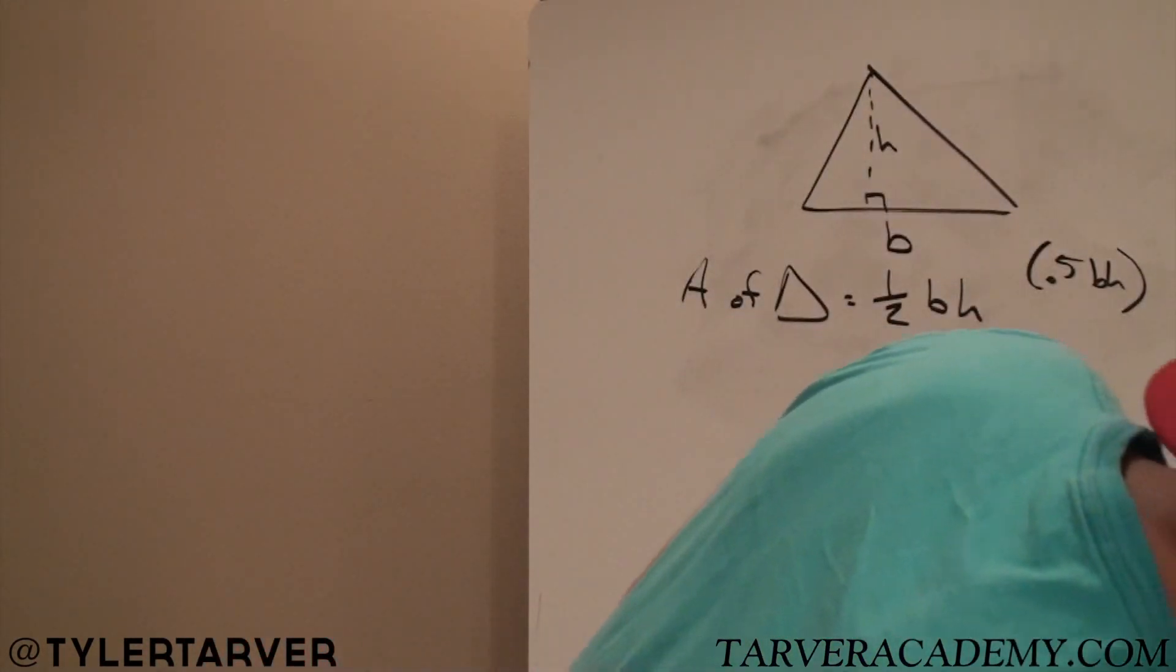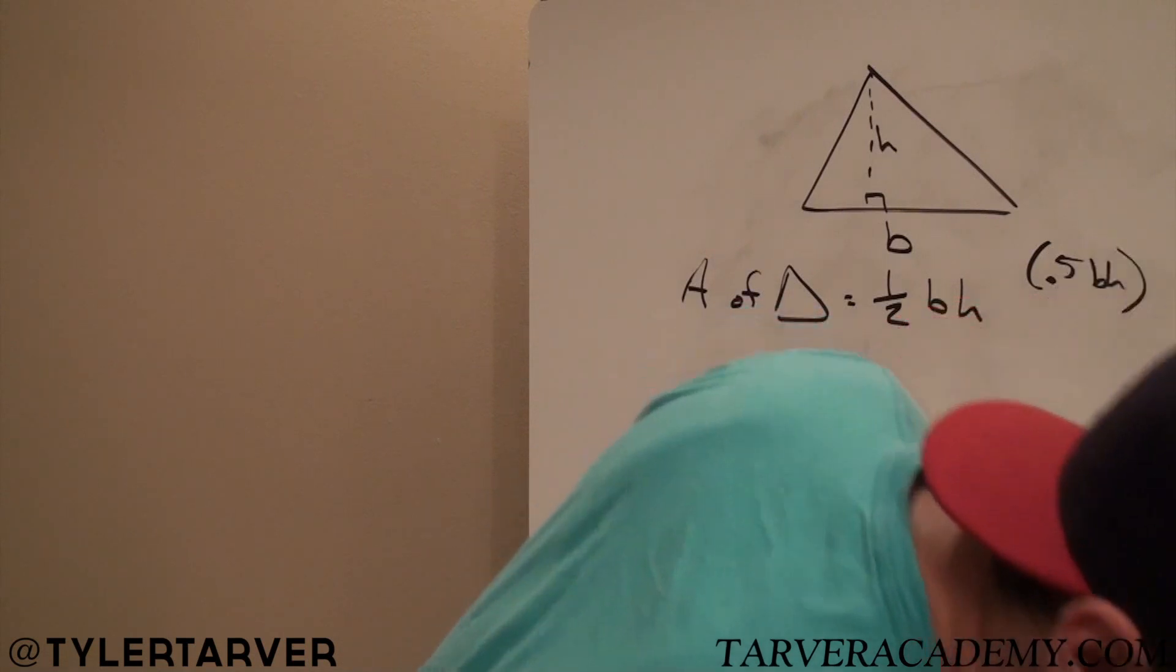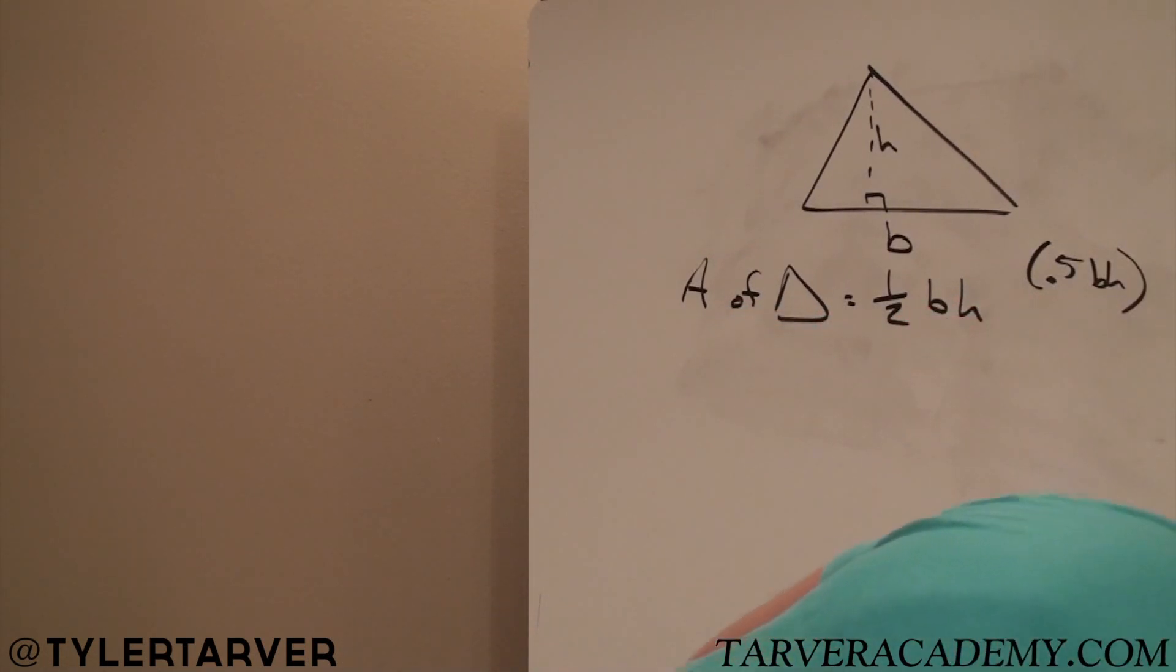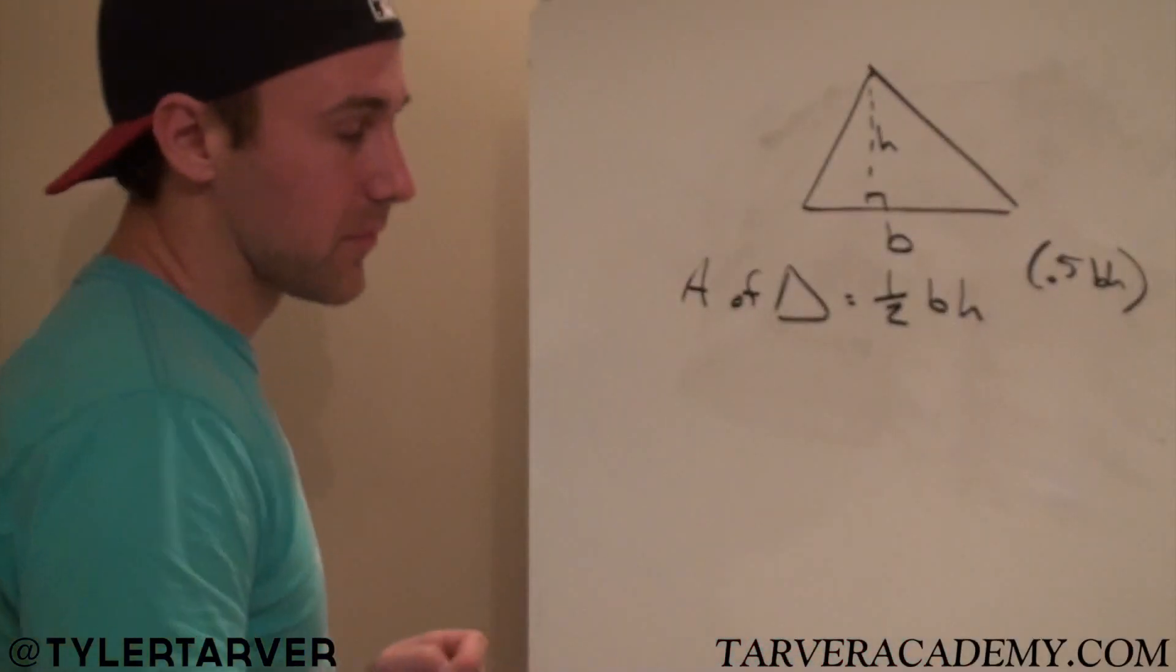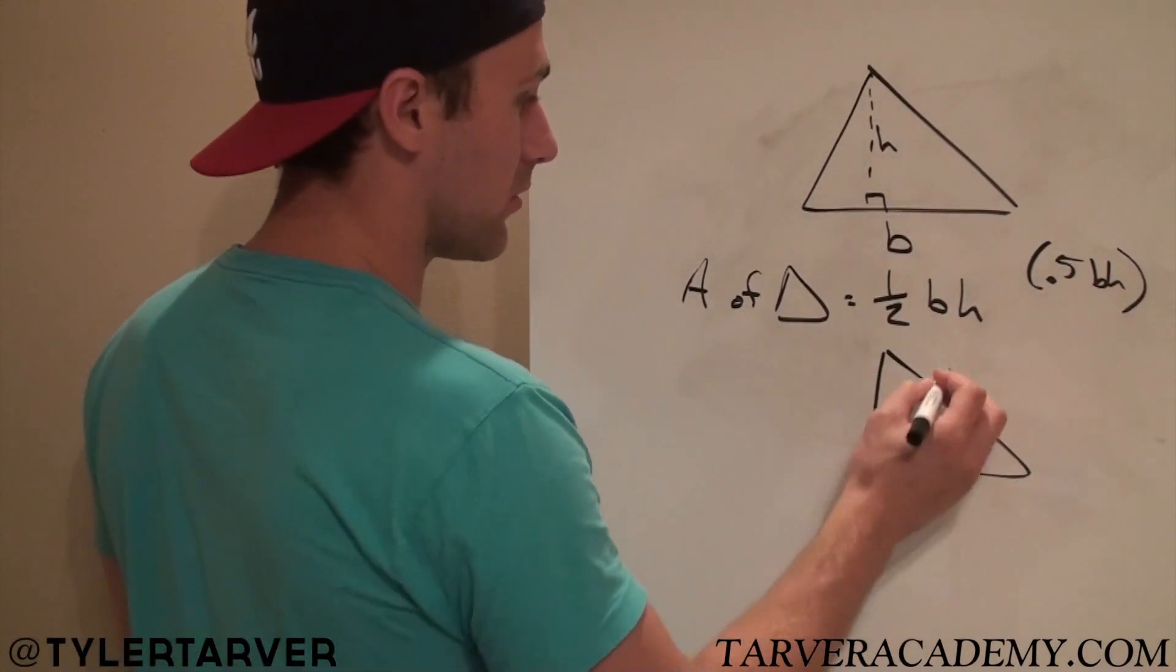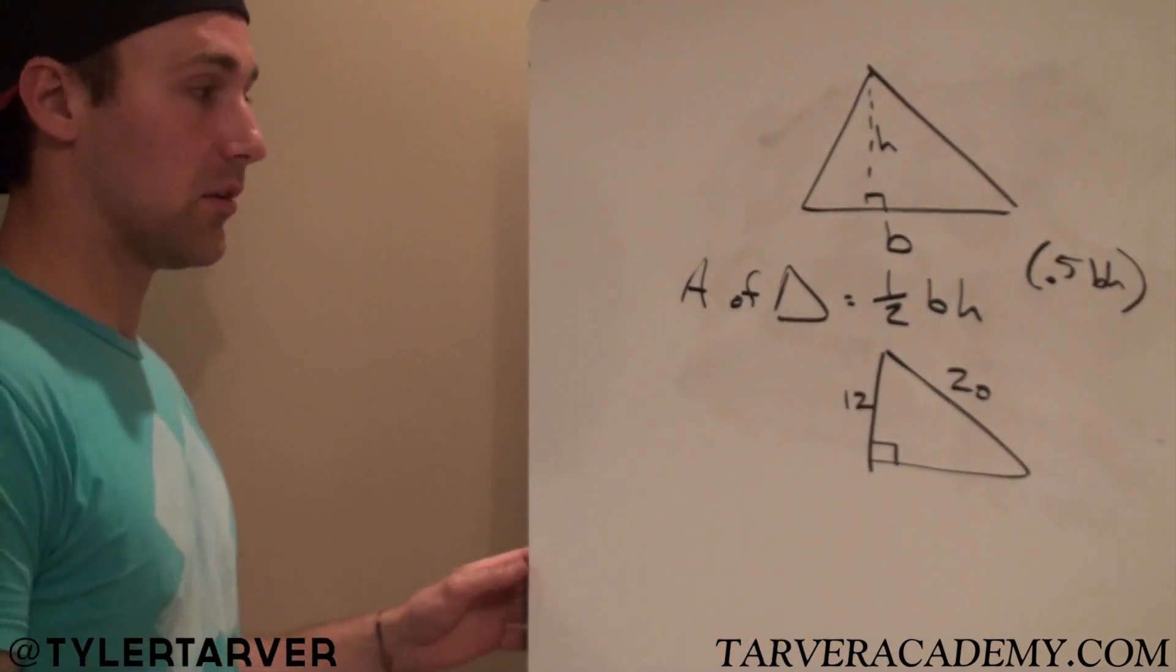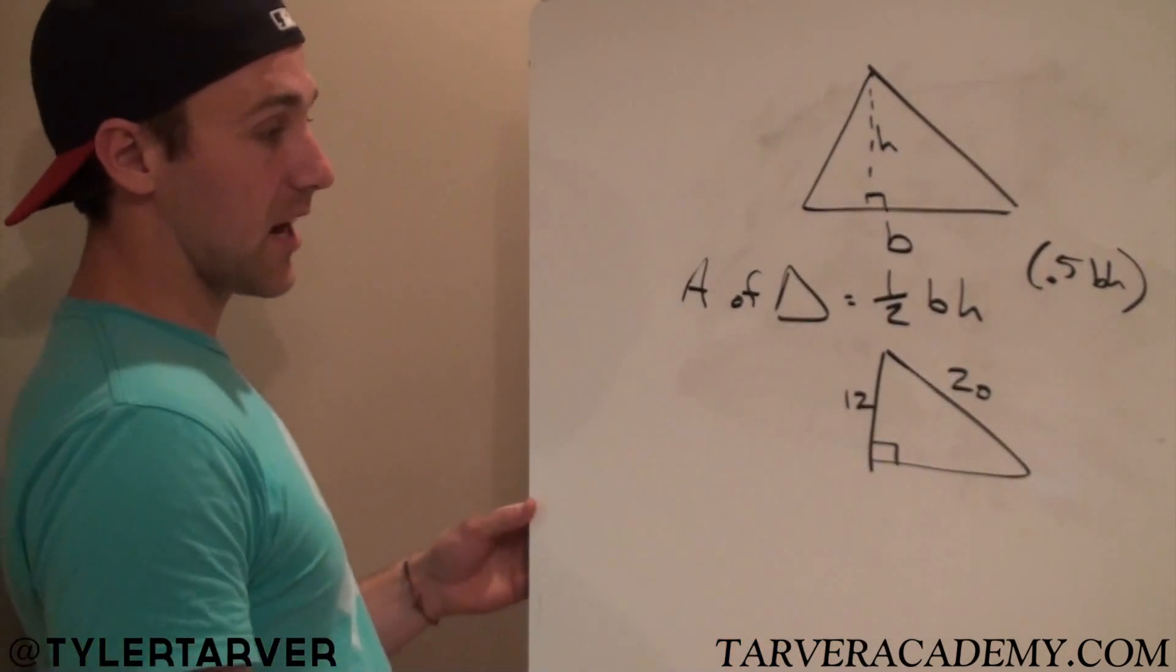Let's see. Let's say that we have a triangle. Let's do a complicated one. Say we have a right triangle. That's 20 and that's 12. Now, we need to find a base and a height.